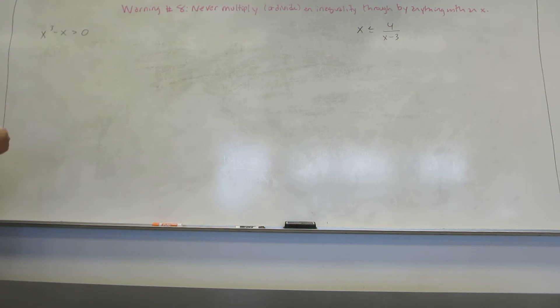Now the first thing to be able to do a sign chart is you have to have a zero on one side. So this one already nicely has a zero on one side. The next step is to factor everything. So I start by pulling out an X. Then I see that I can factor this as X plus 1, X minus 1. So I have a zero on one side and everything else factored.